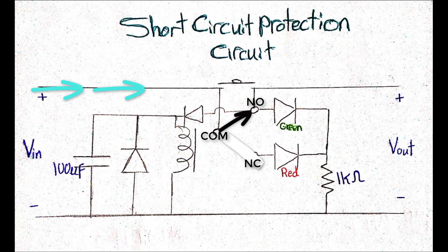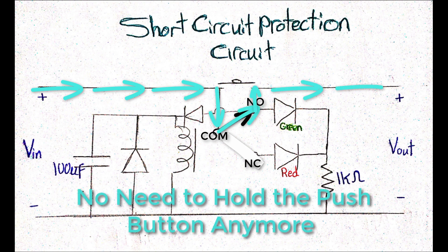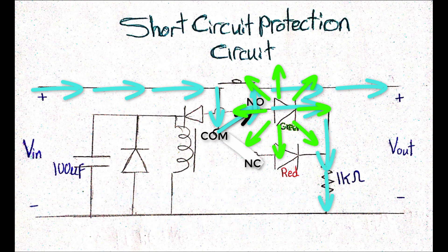With that being occurred, now we have physical connection between the input and the output of the circuit. Of course, the green LED will light up indicating that we have potential difference at the output terminal.